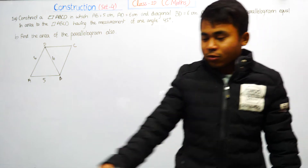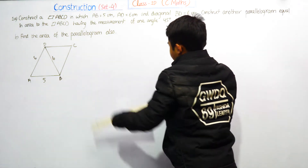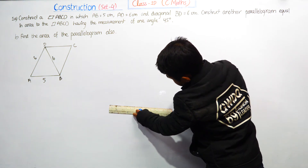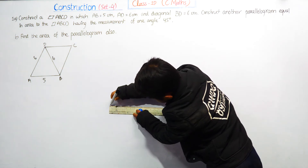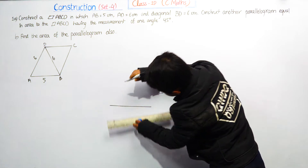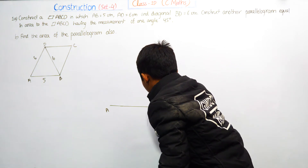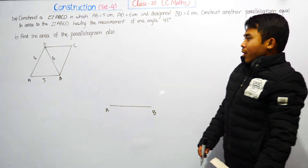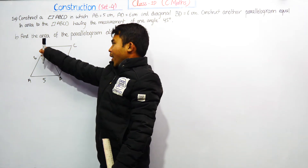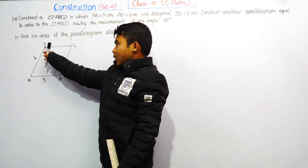Now we will start by drawing AB equal to 5 cm as the base of the parallelogram.